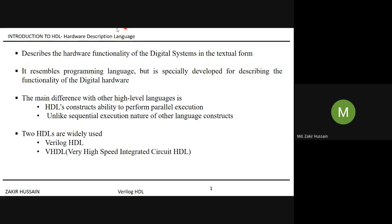Hardware Description Language (HDL) helps us in that way. HDL is like any other high-level language, but the key difference is that HDL supports parallel execution, whereas high-level languages have sequential execution — statement one must execute before statement two. HDL compilers have the ability to handle parallelism.